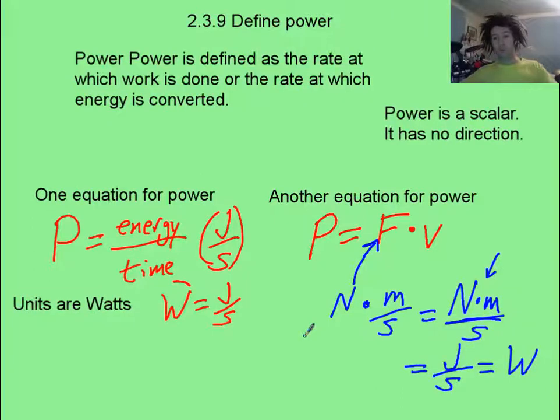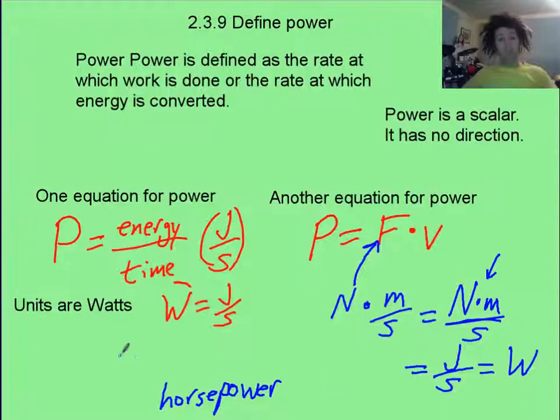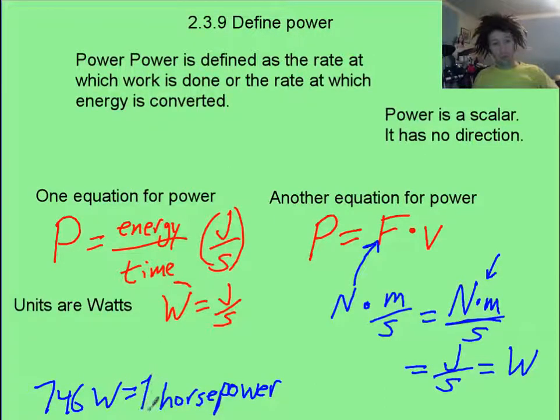Another unit of work is actually the horsepower. That's a non-metric unit of work. You can, there are so many watts in a horsepower. Just looked it up. Turns out that 746 watts equals one horsepower. Apparently, the Scottish physicist James Watt came up with that ratio.